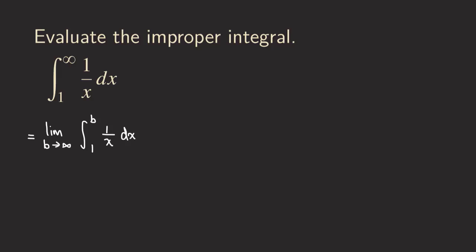First we are going to evaluate the definite integral, and then after that we take the limit. We write down the limit, and integrating 1 over x we get ln of the absolute value of x — that's the antiderivative of 1 over x — evaluated from 1 to b.